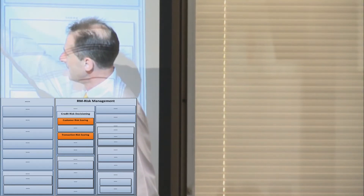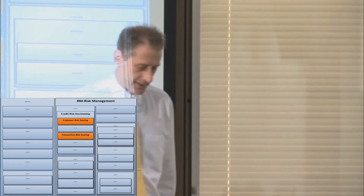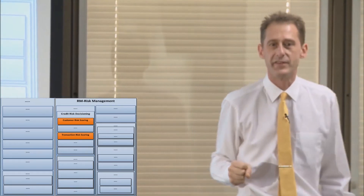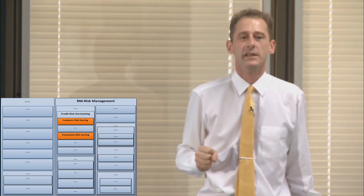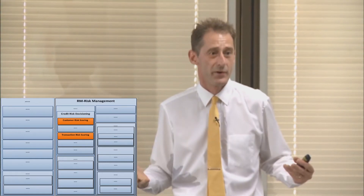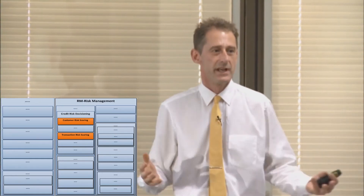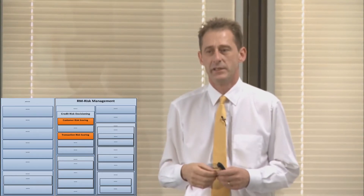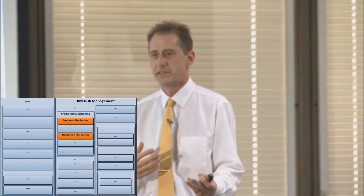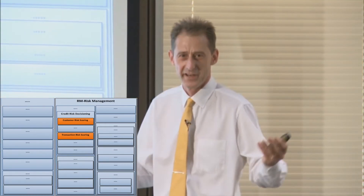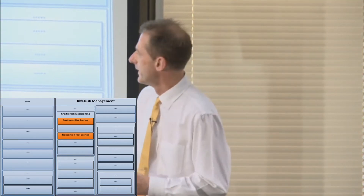I'm going to focus on two of them. Customer risk scoring - what is Glenn Smith's likelihood of default? Glenn Smith as a person - what's his likelihood of actually paying back the loan? You know, he's Glenn Smith, here's what he earns, and so on.